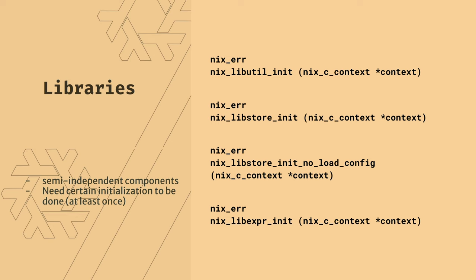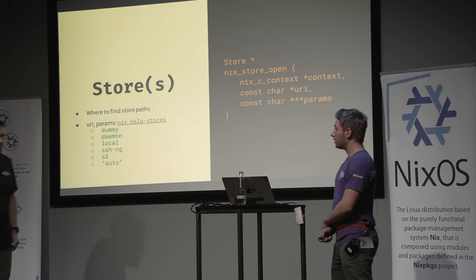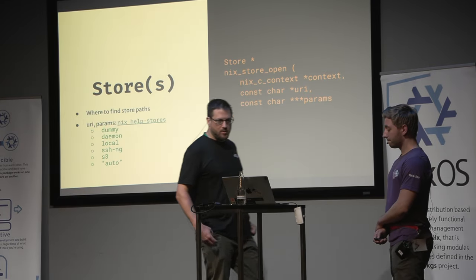We have several somewhat independent components - utilities, which is basically used by all of them, a libstore layer, an expression layer, and values. These are some basic functions you use to initialize those. Like you initialize the utils. You can initialize the store with or without loading the configuration, which lets you substitute your own static configuration if you don't want the default Nix handling of it.